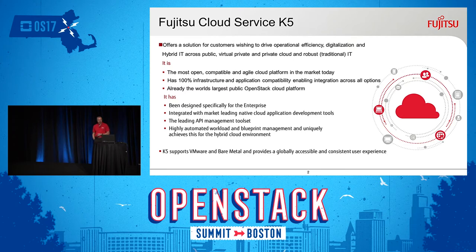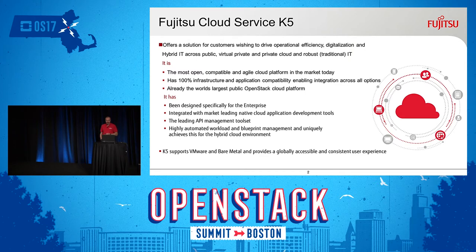Fujitsu K5 cloud service is an enterprise cloud service that we've launched. It started off in Japan, and now it's available in other countries. It's the most open, compatible, agile cloud platform in the marketplace today. It's the largest OpenStack deployment that we know of in the world. We sell it not only as a private cloud but also as a public cloud service in the U.S., and it's been designed specifically for the enterprise with native tool sets and PaaS services. It's SAP certified as both a HANA and SAP cloud service, and comes with PaaS layers and API management tools.